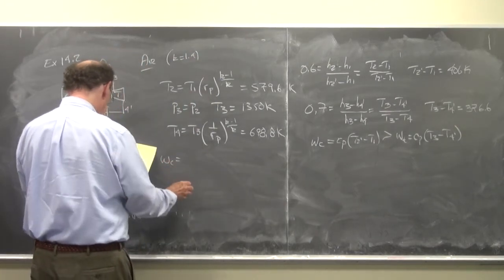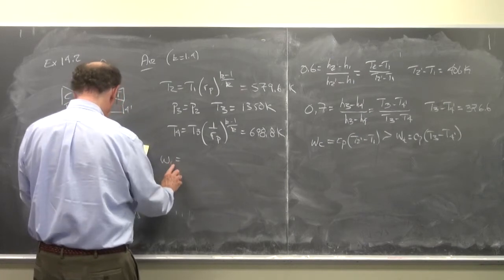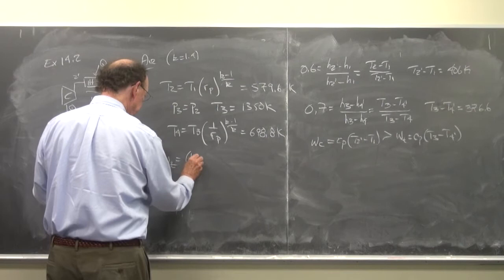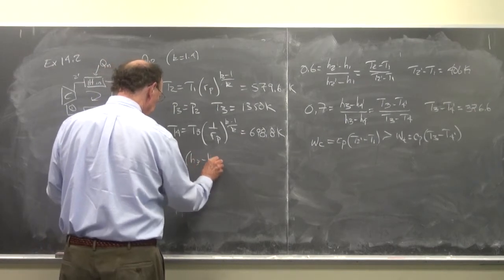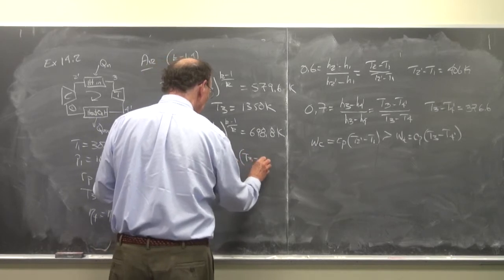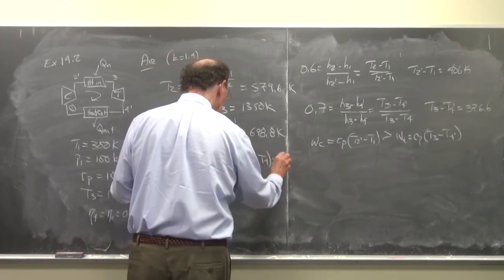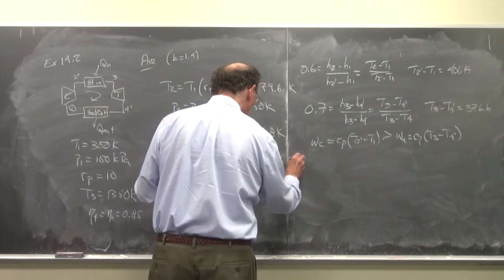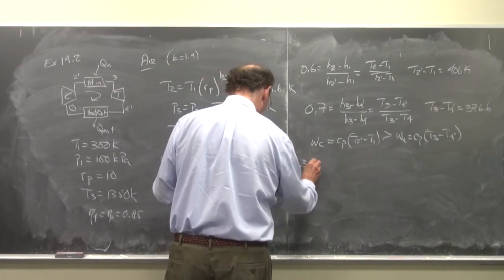wc is equal to wt, rather wt is equal to h3 minus h4, is equal to c sub p times T3 minus T4, is equal to 654.3 kilojoules per kilogram.